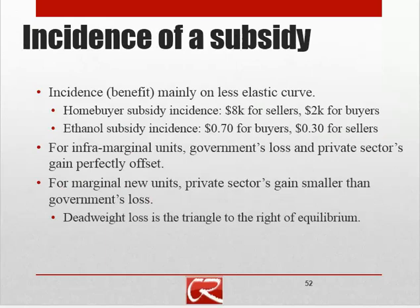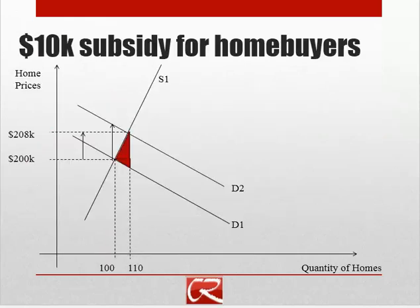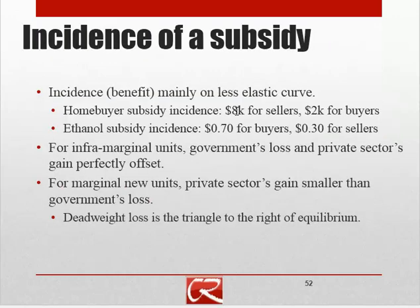What about the incidence of the subsidy? The incidence of taxation doesn't depend on which side of the market we tax, and the same holds true for a subsidy — the incidence mainly lies with the less elastic curve. In our homeowner example, there was a $10,000 subsidy; $8,000 of that pushed up the market price, so $8,000 was a benefit to sellers. Since the market price rose $8,000 but buyers received $10,000, buyers are still $2,000 better off.